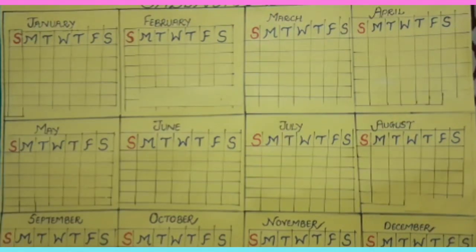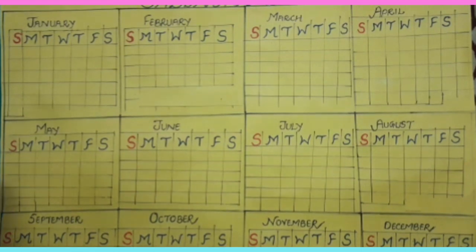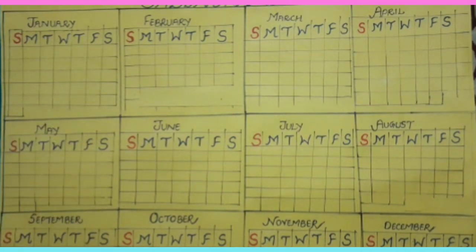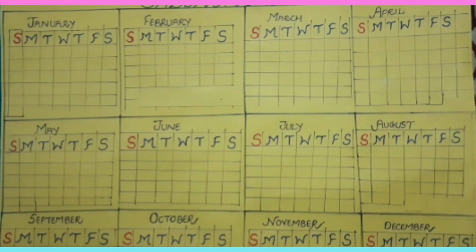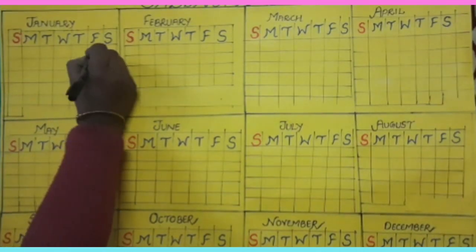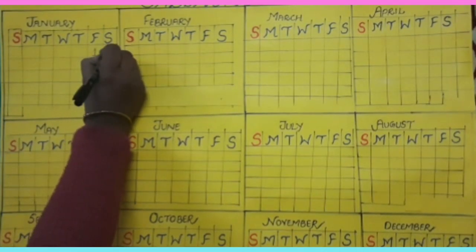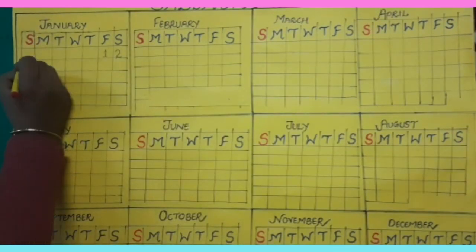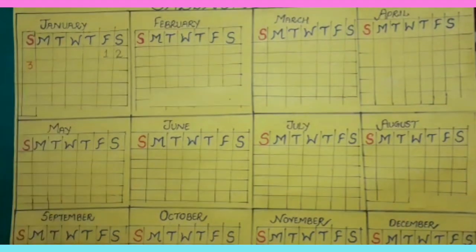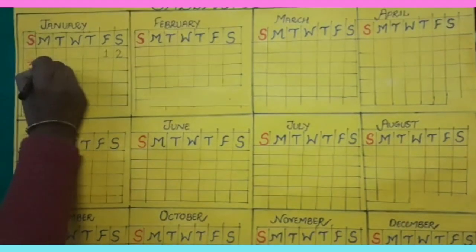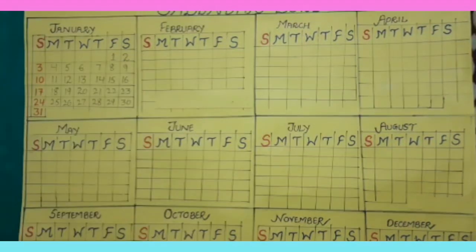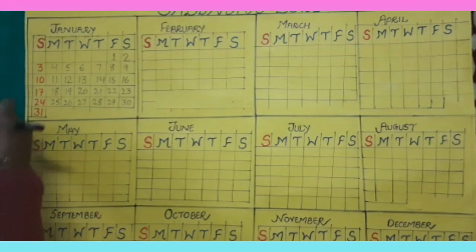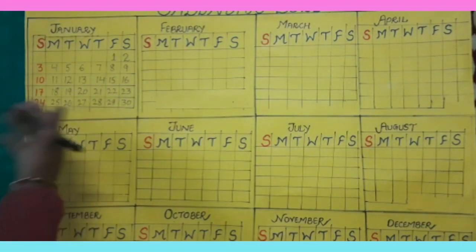Now we will start with the month of January. What is the first day of January 2021? Yes, it's Friday. Now you can see the month of January 2021 filled in on the calendar.